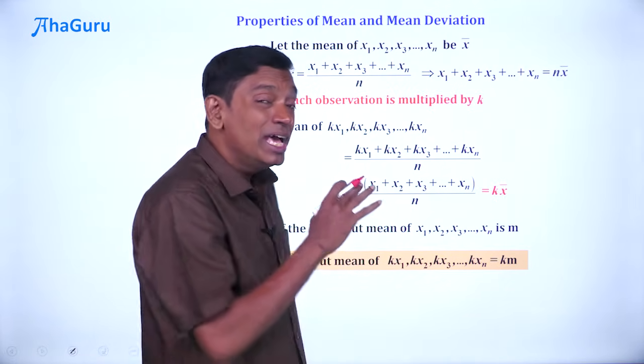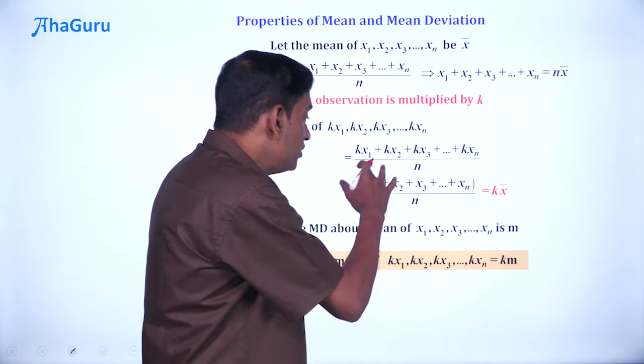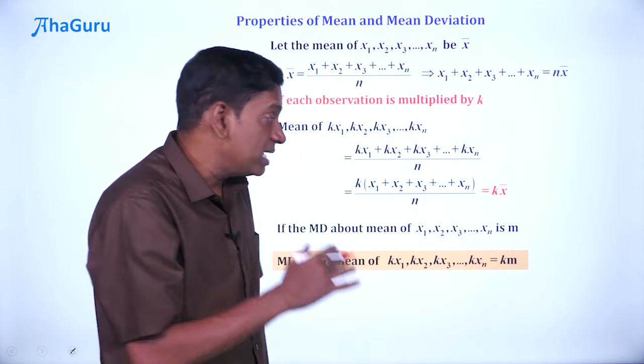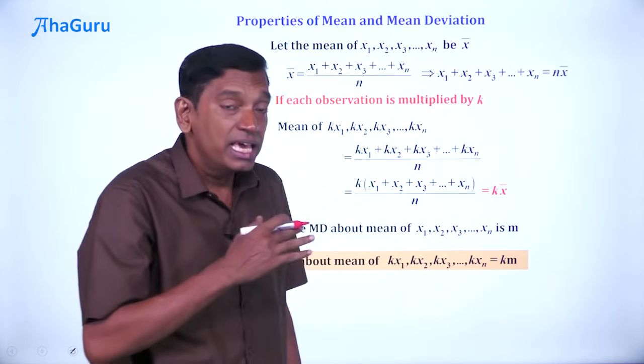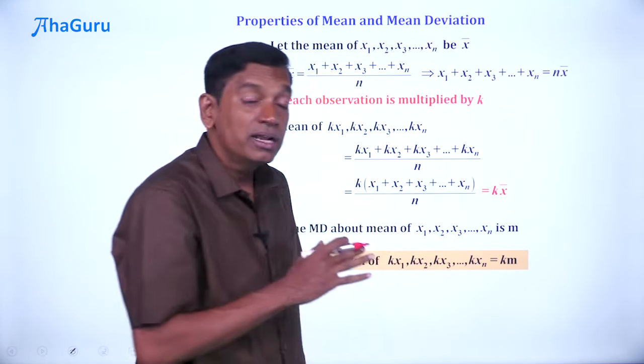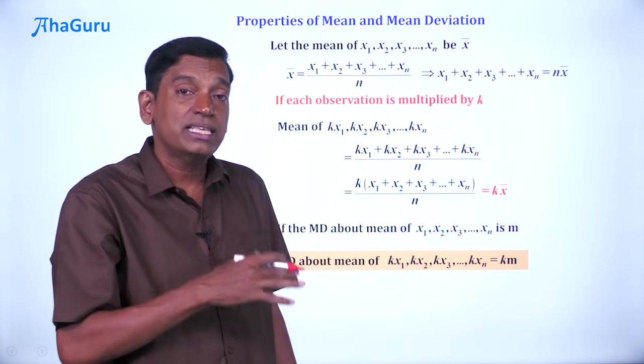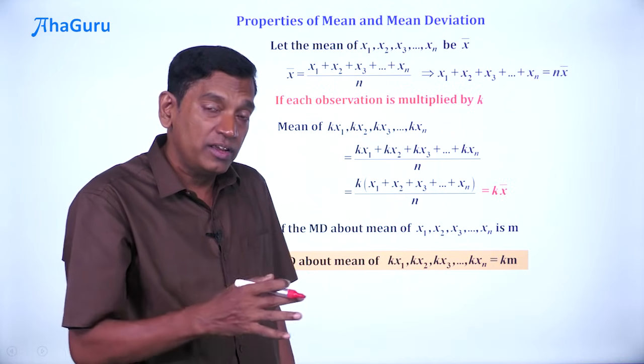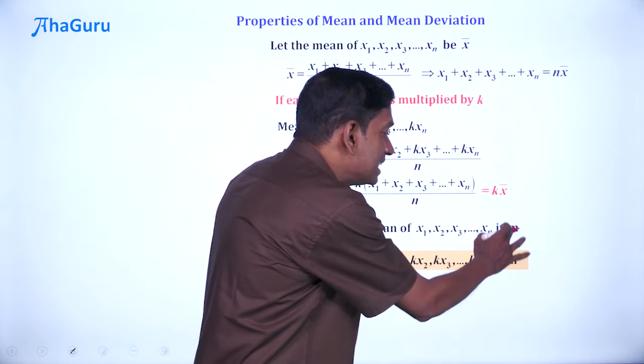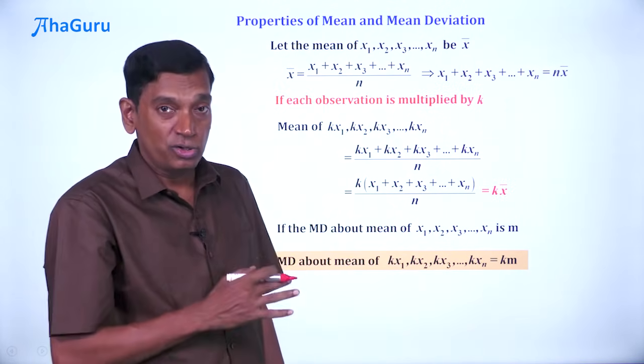Because when you do xᵢ - x̄, everything has gotten multiplied by k. xᵢ has become kxᵢ, x̄ has become kx̄. So the new expression is k(xᵢ - x̄). If you add all of them and take the k out, you get k × m after all the modulus operations.